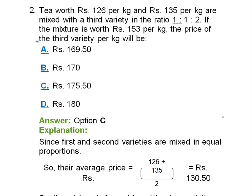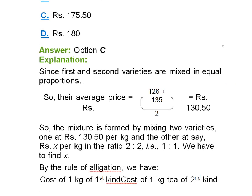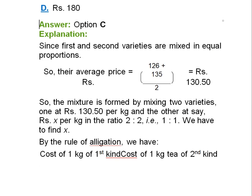If the mixture is worth Rs. 153 per kg, the price of third variety per kg will be. The answer is option C. Now let's see how. Since first and second varieties are mixed in equal proportion.